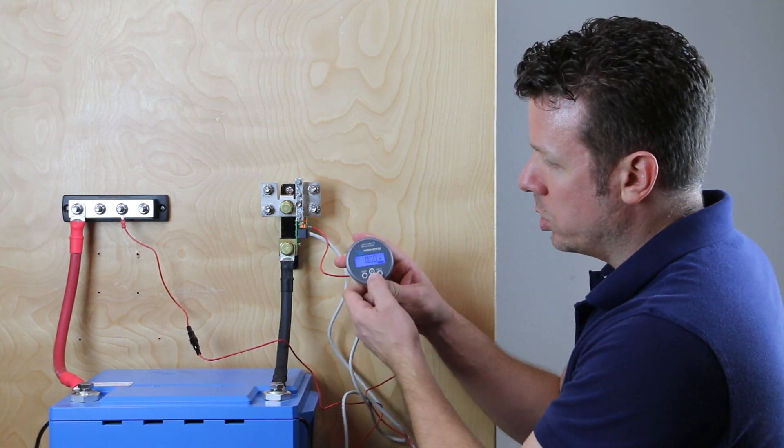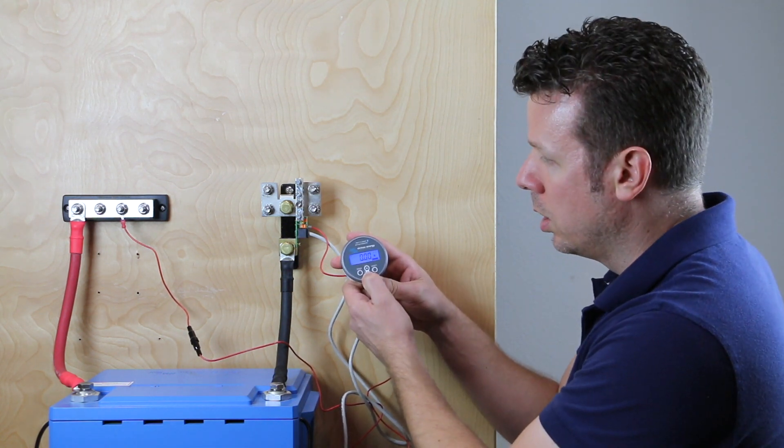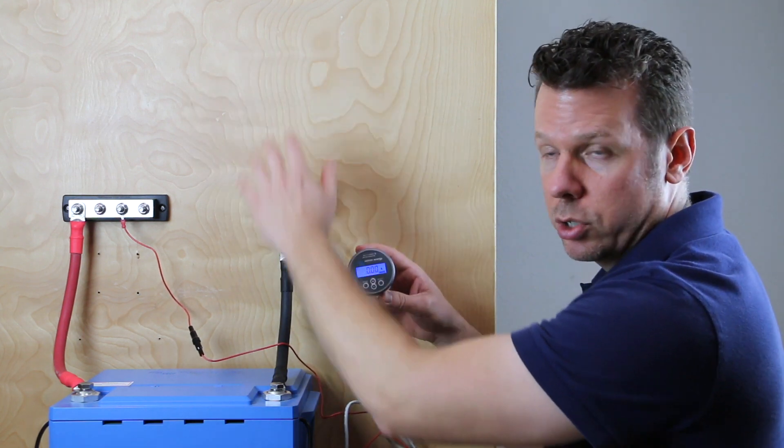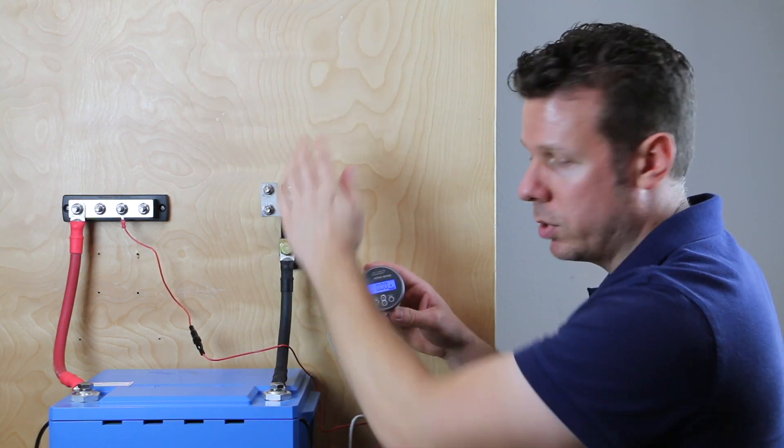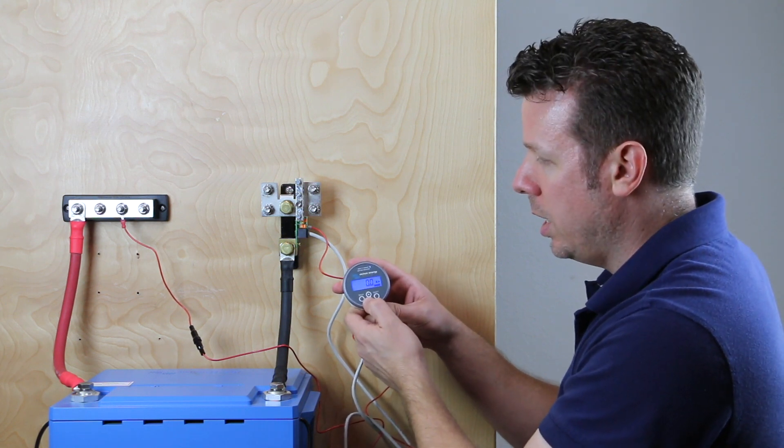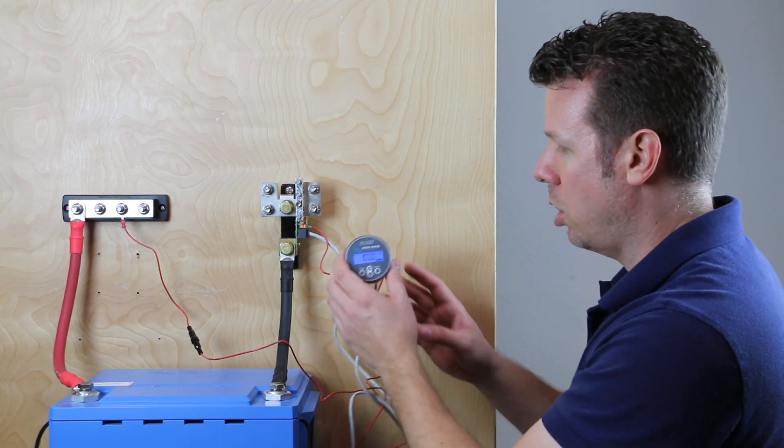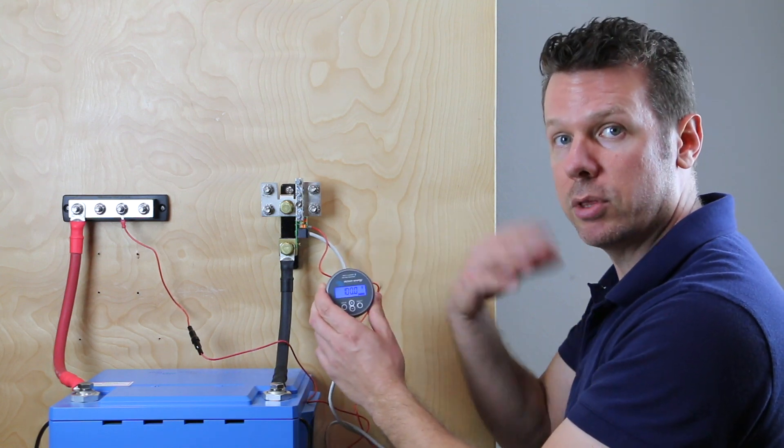So this, you can scroll through the settings, there's battery voltage 13.0, amps is zero because we don't have any loads or chargers. So there's no power transferring through here, watts is zero, amp hours and it's telling us we have a hundred percent charge.